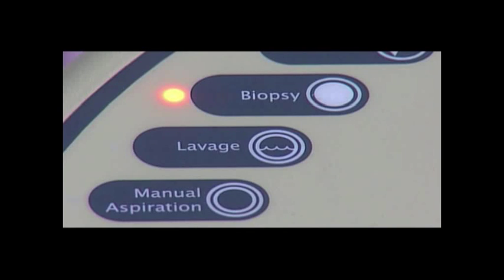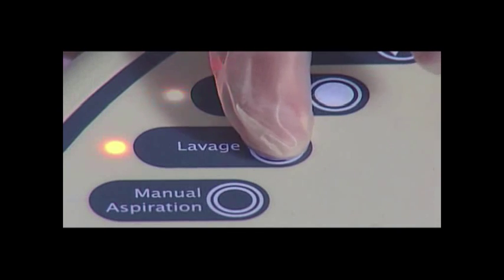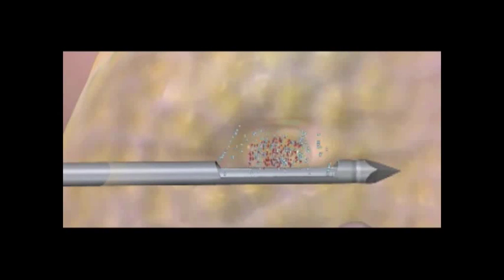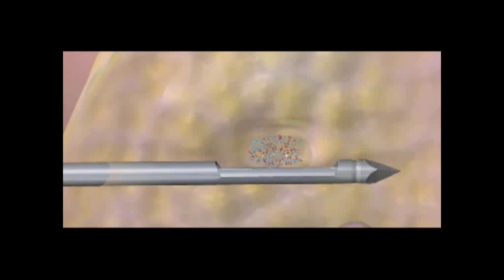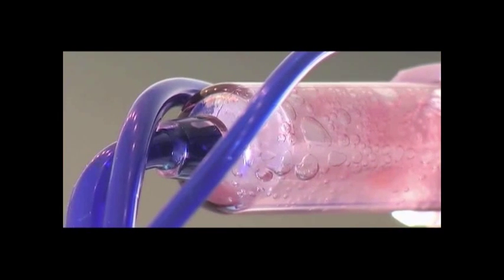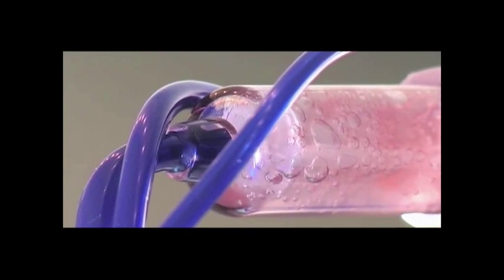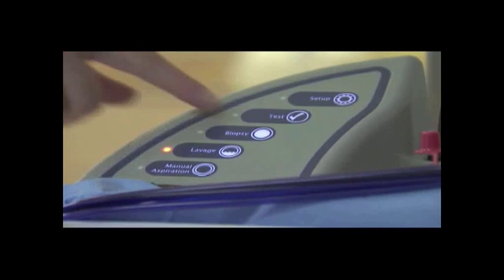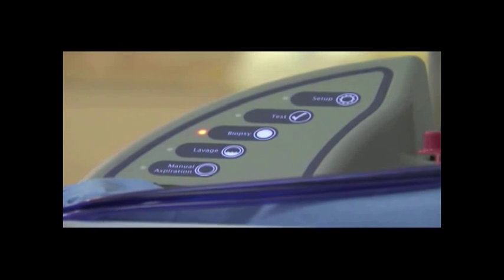After tissue acquisition is complete, switch the console to lavage mode by pressing the button marked lavage. Lavage continuously irrigates and aspirates the biopsy cavity, allowing loose tissue and other fluids to be cleared from the biopsy site. Lavage the cavity until the fluid collected in the tissue collection chamber indicates the cavity is clear. Switch the console back to biopsy mode by pressing the button marked biopsy.